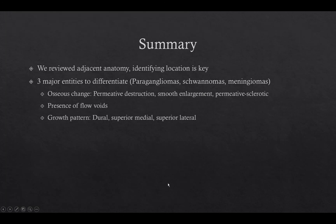We've talked about the adjacent anatomy and identifying that the mass is originating within the jugular foramen is very important, as if it's originating from an adjacent anatomic subsite our differential would be different. The three major entities to differentiate are paragangliomas, schwannomas, and meningiomas. If the imaging appearance does not match one of these, also think about metastatic disease, lymphoma, and multiple myeloma, and look for risk factors such as known malignancy elsewhere. Look for osseous change: is there permeative destruction of bone, smooth enlargement of the foramen, or permeative sclerotic change as in a meningioma? Are there flow voids? Paragangliomas are highly vascular. What is the growth pattern — along the dura as in a meningioma, superomedial as in a nerve sheath tumor, or superolateral as in a paraganglioma?